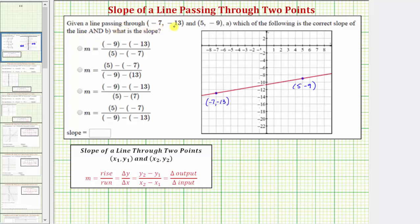Given a line passing through (-7, -13) and (5, -9), which of the following is the correct slope of the line? And what is the slope?